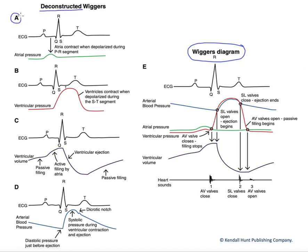In A, we're going to look simply at one of these traces — we're going to look at the atrial pressure here in the green line. We're going to use our ECG as our reference for each of these figures that follow A through D. We do that because the ECG represents the electrical activity of the heart, and the electrical activity is a predictor of the mechanical, which is what we're looking at within many of these traces.